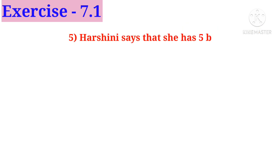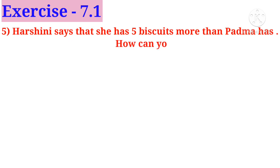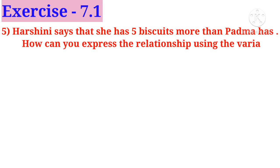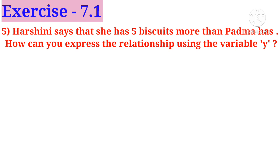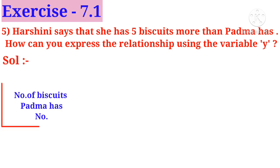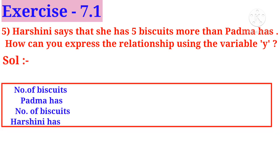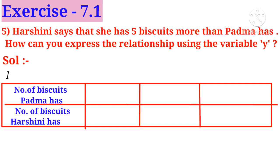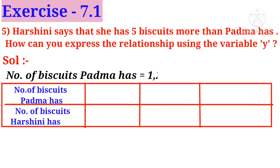Number five: Hashni says that she has five biscuits more than Padma has. How can you express the relationship using the variable y? Solution: write it in a tabular form. We don't know how many biscuits Padma has — she may have one biscuit, two biscuits, or three biscuits. Observe that Hashni always has five biscuits more.